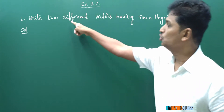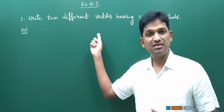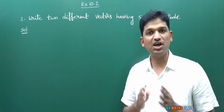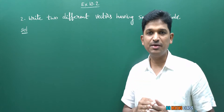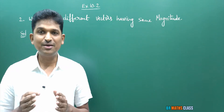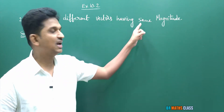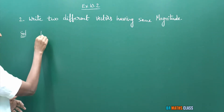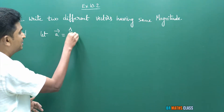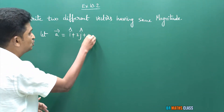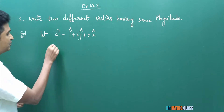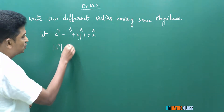Theory part knowledge is compulsory here. Two different vectors — equal vectors means vectors having the same magnitude and same direction. If they do not have the same magnitude or same direction, they are different vectors. I will write an example of two different vectors having the same magnitude. Consider a bar = i cap + 2j cap + 2k cap.